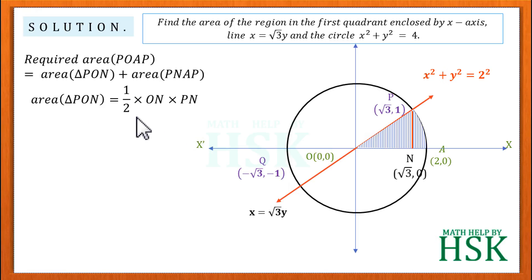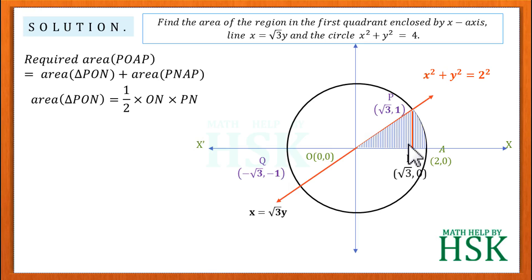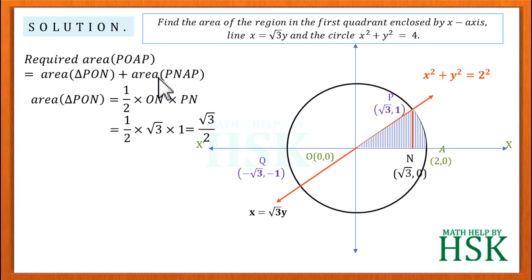First, we calculate the area of the triangular region PON. Since we dropped a perpendicular from P to the x-axis, triangle PON is a right-angled triangle. Area = ½ × base × height = ½ × ON × PN. The length ON = √3 and the perpendicular distance PN equals the y-coordinate of P, which is 1. So the area of triangle PON = ½ × √3 × 1 = √3/2.